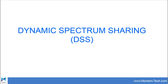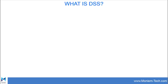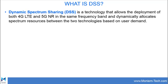Welcome to monamtech.com. In this video we will talk about DSS, or Dynamic Spectrum Sharing. This is the first video in the DSS series. Dynamic Spectrum Sharing is a technology that allows the deployment of both 4G or LTE and 5G in the same frequency, and dynamically allocates the spectrum resources between the two technologies.